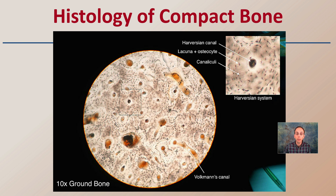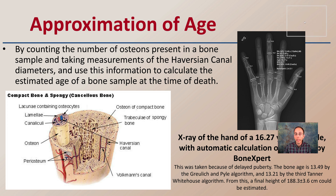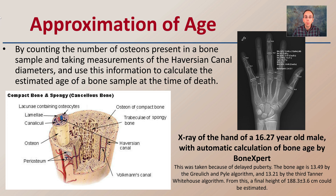To determine the approximate age of the individual, we look at the number of osteons present in a bone sample. Taking measurements of the Haversian canals' diameters can also be useful. We use this information to calculate the estimated age of the bone sample, ideally at the time of death. This can be used on a skeleton we may know very little about — we only need a very small bone fragment to determine the age.